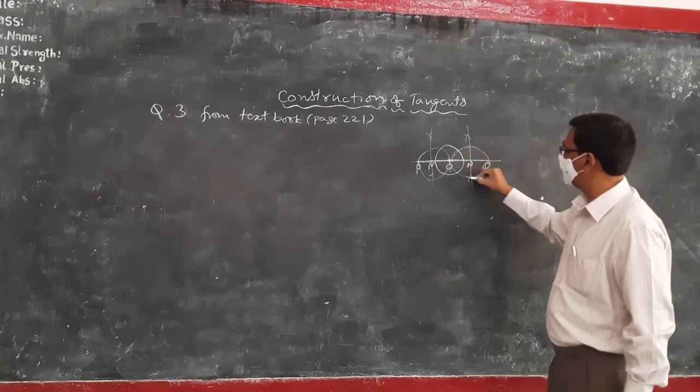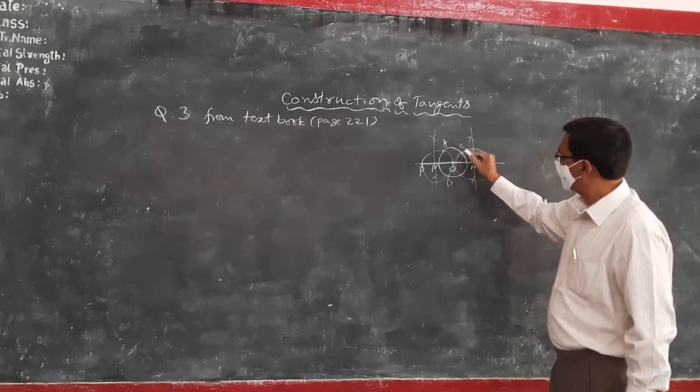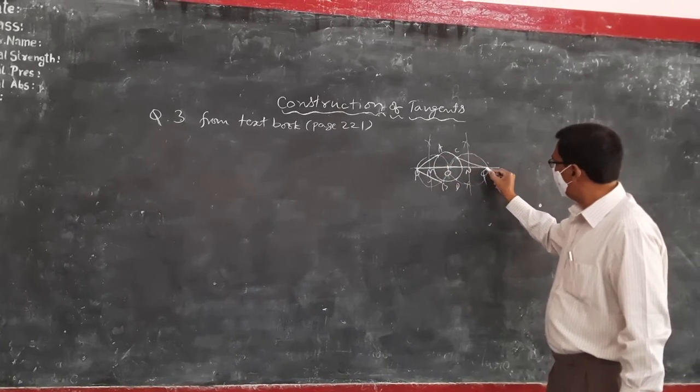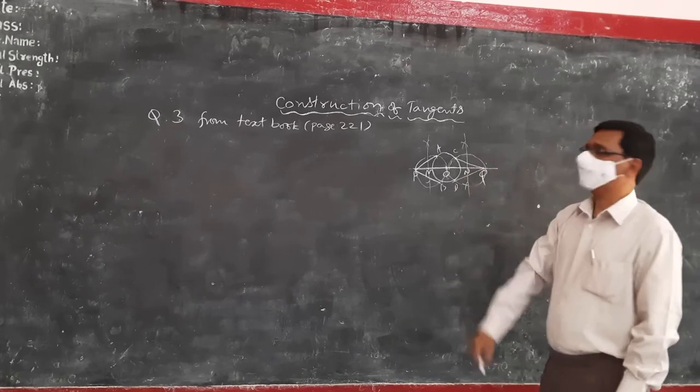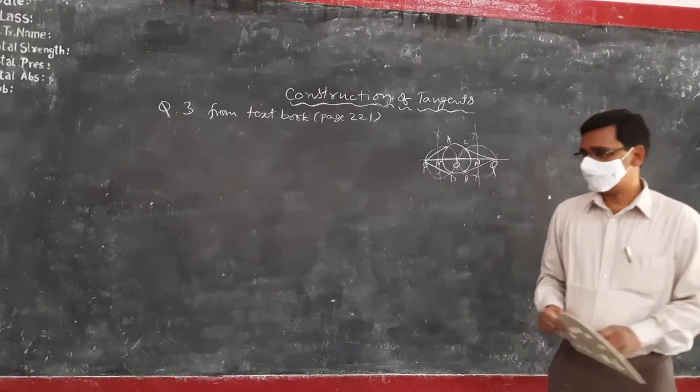Then the circles will be intersecting like this. And here you get A and B, here you get C and D. Now, let us see this original construction here.